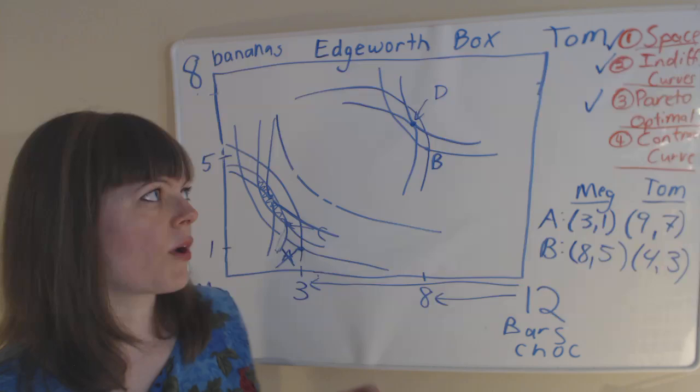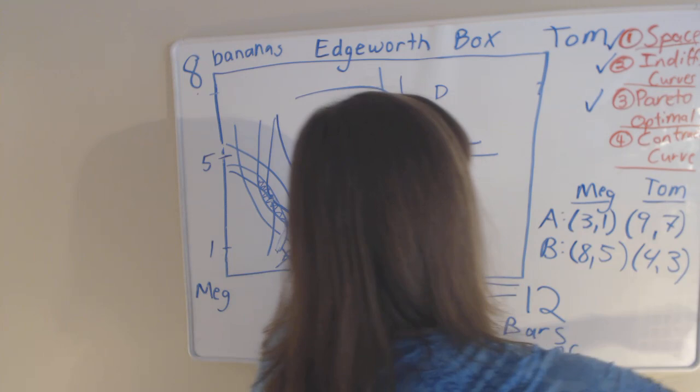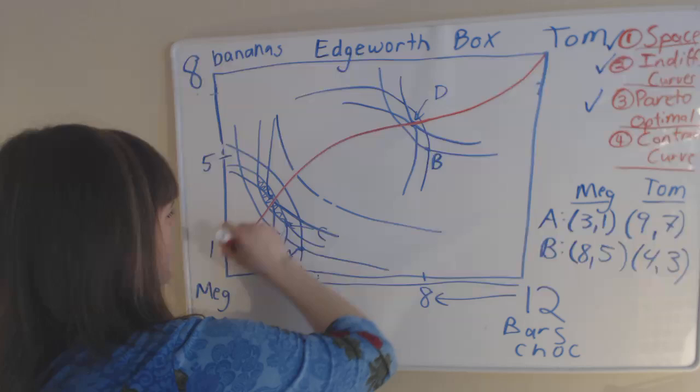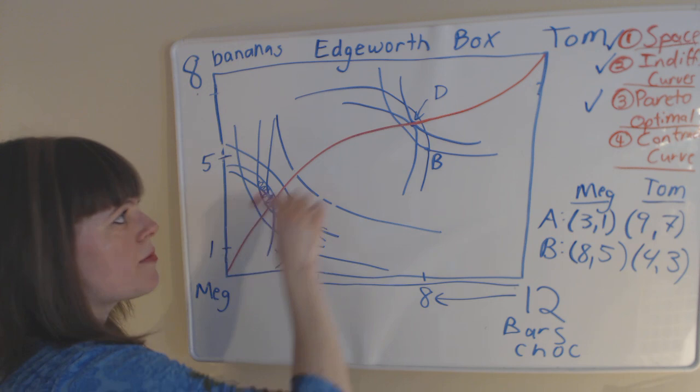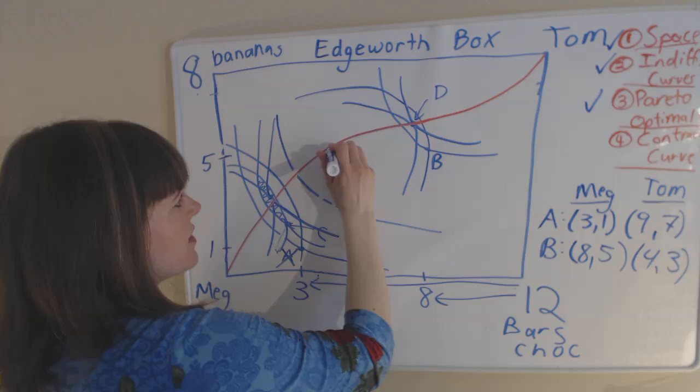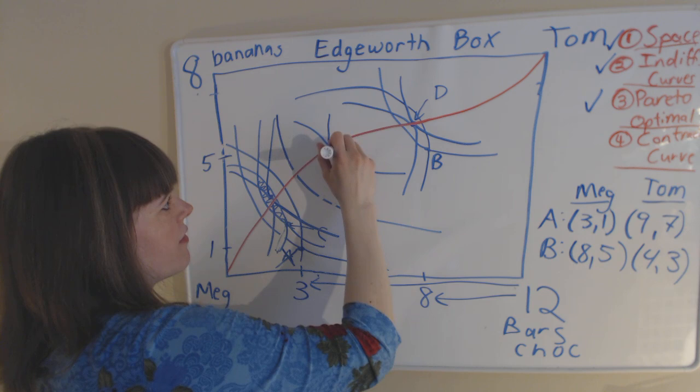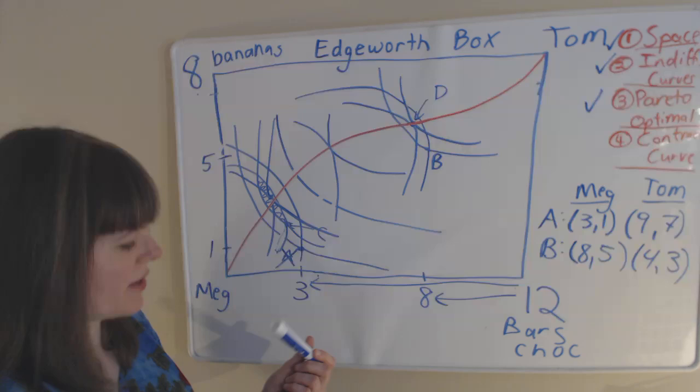And you can actually map, and let me use a different color for this, you can actually map a line from one side to another. It doesn't have to be a straight line, it can be curvy and things like that, that is entirely made up of Pareto optimal points. So that means every single point on this line has Meg's indifference curve and Tom's indifference curve as tangent. And that's called the contract curve.